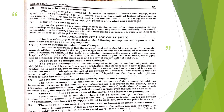The next point is the assumptions of the law of supply. The cost of production should not change — if this assumption is violated, the law will not hold. We need the cost of production to remain the same. If cost of production changes, the producer will not offer goods for sale at higher prices. And if cost of production decreases, he will offer more goods for sale at a lower price.